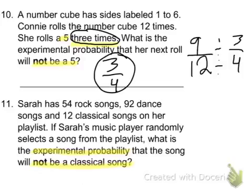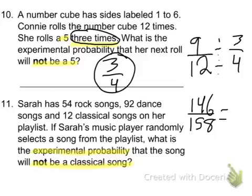The first thing you have to do is add all these up. If you add 54 rock songs, 92 dance songs, and 12 classical songs, you get 158. Out of those 158, there are 12 classical songs, so there are 146 songs that are not classical. You can divide and simplify, and when you simplify you get 73 over 79.